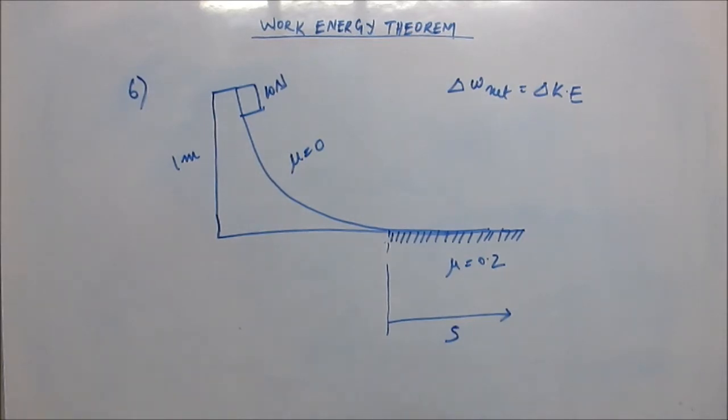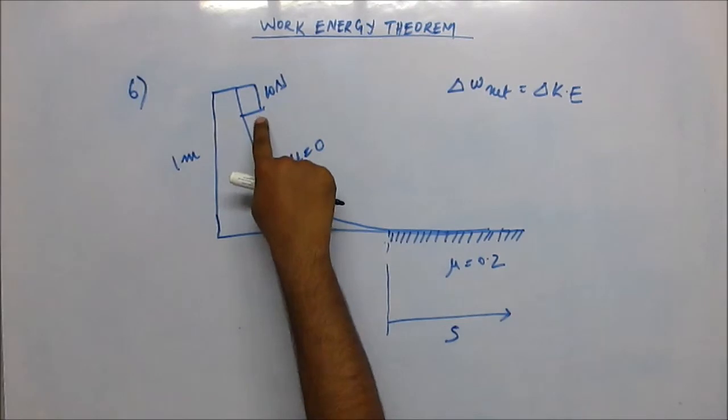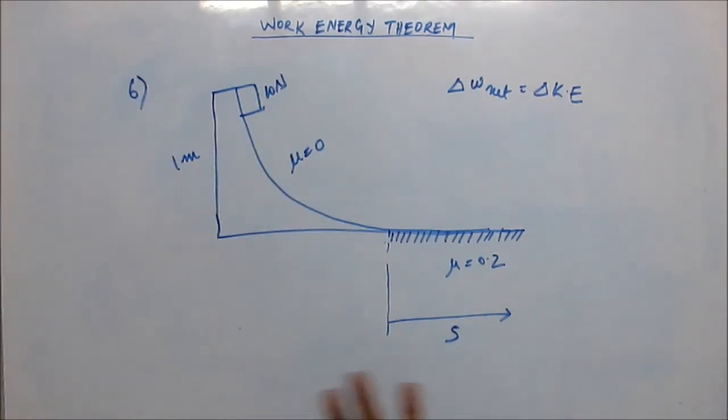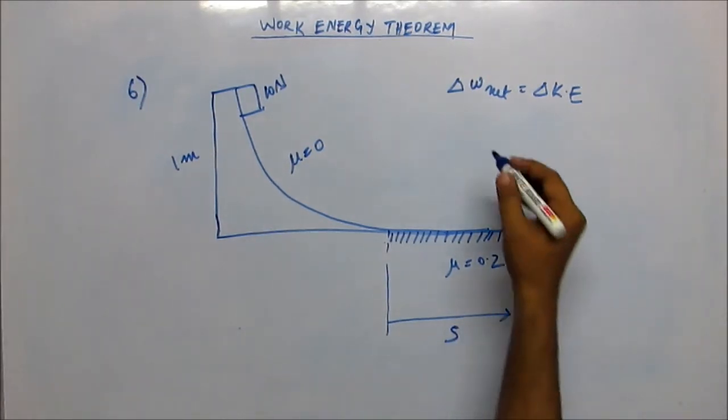There will be some normal reaction acting on this block as well, but we never consider normal reaction for calculating work. Do you know why? Because normal reaction is always normal, meaning it is always perpendicular to the plane in which the block is moving. So it is perpendicular to displacement. When a force is perpendicular to displacement, it doesn't do any work. That's why we don't take normal reaction into account.